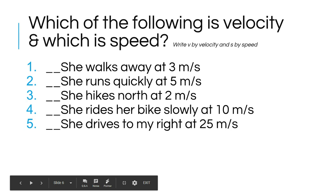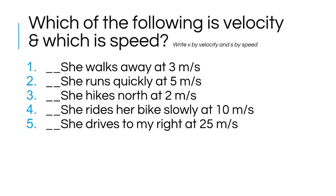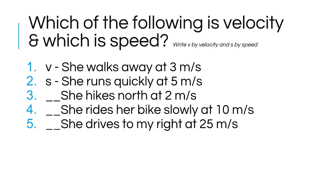What'd you put for the first one? Well, away describes the direction she's walking and three meters per second describes her speed, so that's going to be velocity. She runs quickly at five meters per second - well, quickly isn't a direction, it describes how fast, so that's only got speed in it and does not have velocity. She hikes north at two meters per second - you might not usually say north, but that is a direction and this is a speed, so that would be velocity.